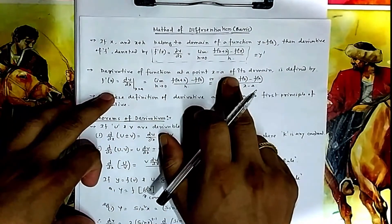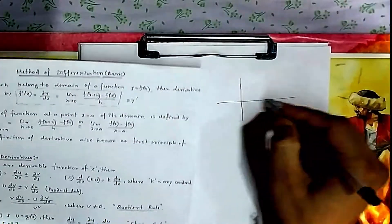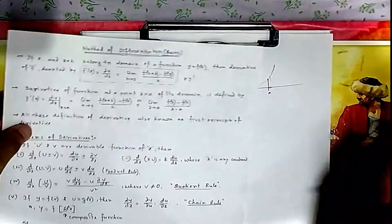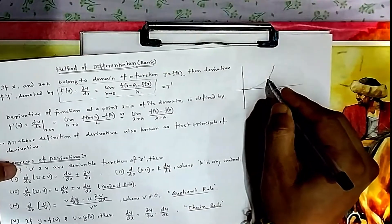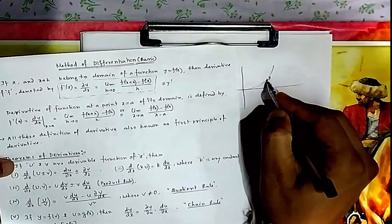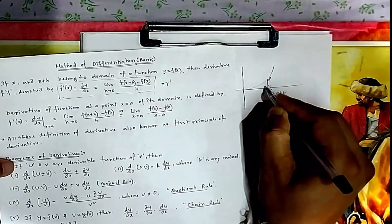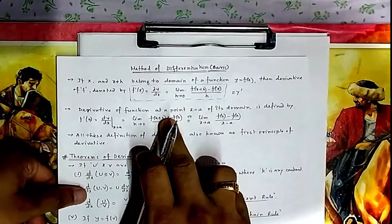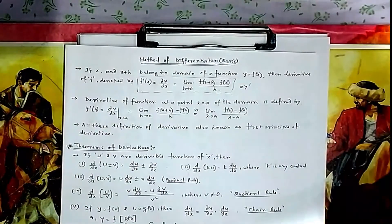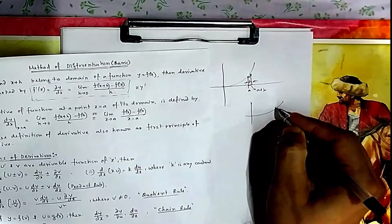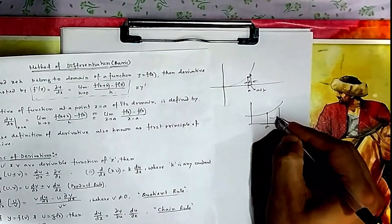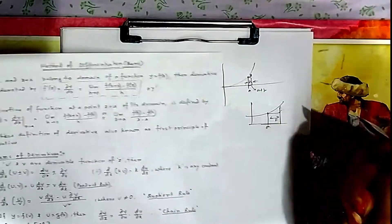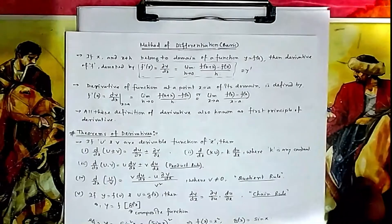If you are differentiating at a particular point A, then on the graph you move a little bit in either direction depending on h. That gives f(a+h) — the new position — minus f(a), which is the change in y, divided by h, the change in x. So if you change x, y will change — that is the rate of change, which is another application coming under application of derivatives.